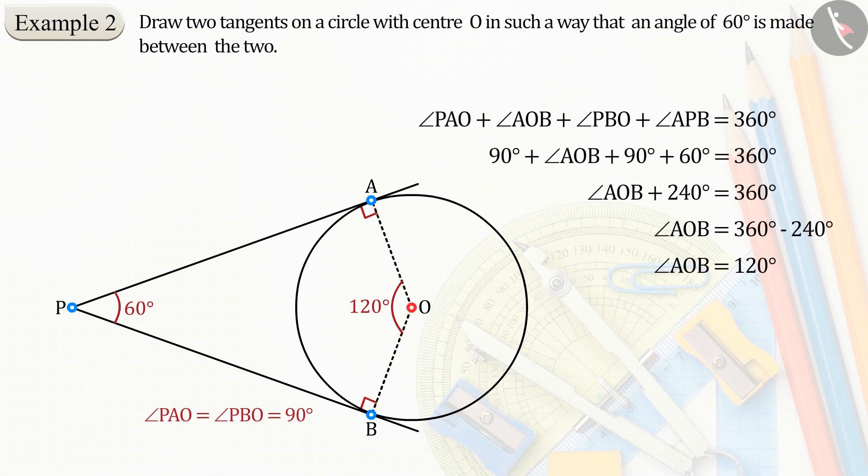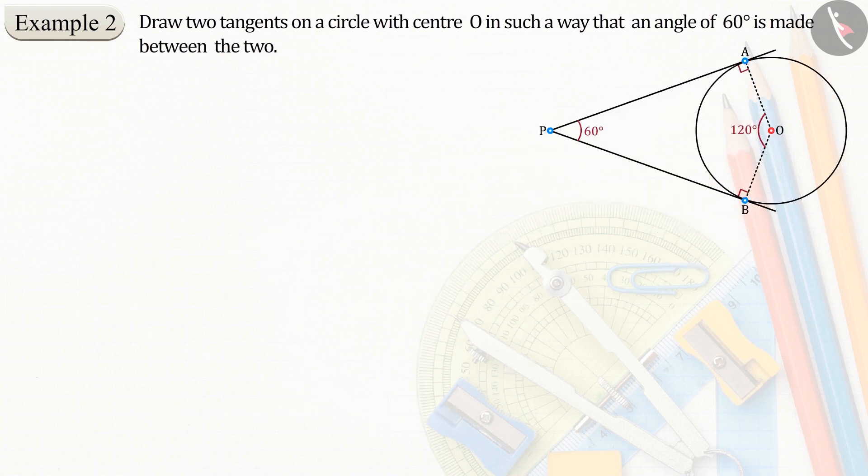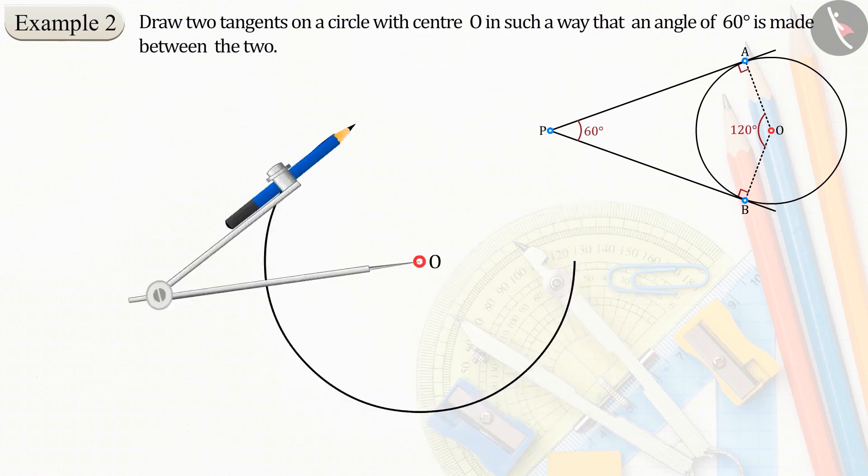In this way, we complete our rough diagram. Let us begin with the actual diagram, keeping this rough image in mind. First of all, consider point O as the center. Let's draw a circle of an appropriate radius.